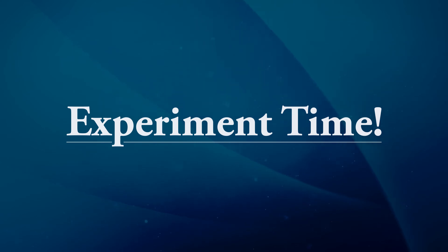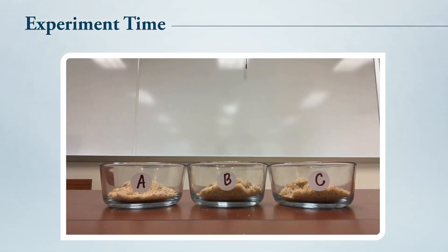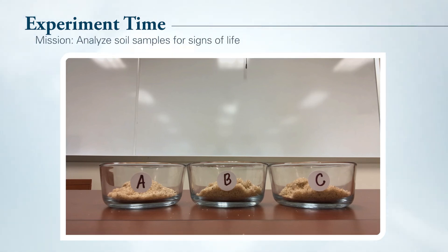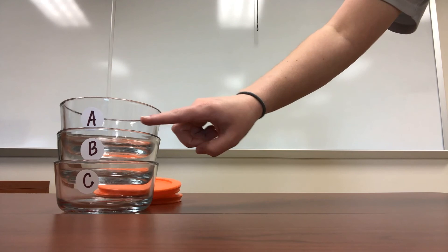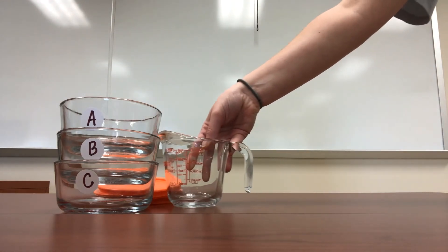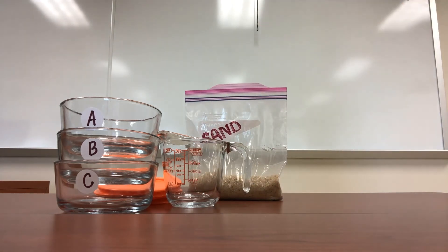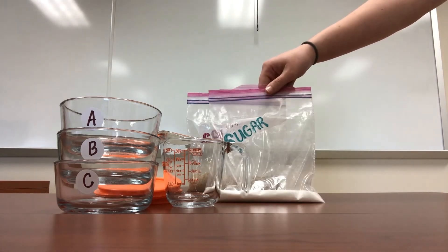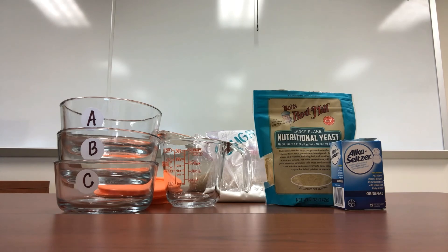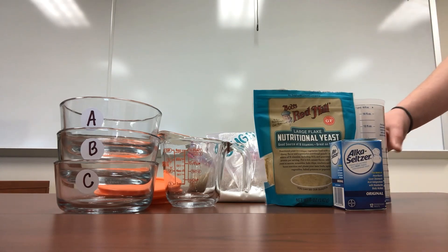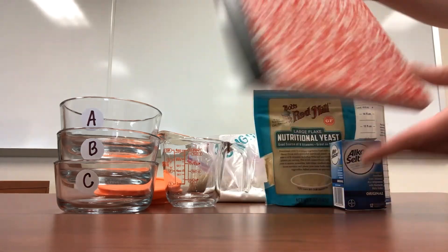Okay students, the moment we've been working so very hard for — an experiment that puts your model definition of life to the test. Astronauts — that's you parents and caregivers — after years of hard work, have brought back three soil samples from Mars. And NASA is now asking its scientists — that's you students — to analyze them for signs of life. The soil samples you are testing will be prepared using the following materials: three small containers with airtight lids labeled A, B, and C; a measuring cup that measures in milliliters; 150 milliliters of clean play sand; 15 milliliters of sugar; 5 milliliters of yeast; one fizzing antacid tablet crushed into fine powder; and a cup filled with warm tap water. You will need your lab notebook again to write down your experiment's results or data. Don't forget to have some paper towels in case of spills.